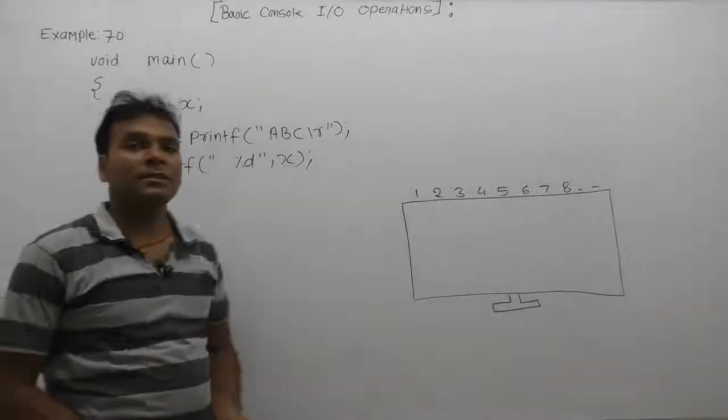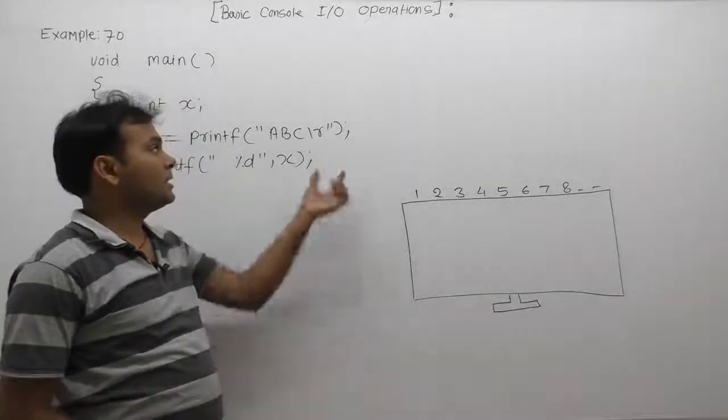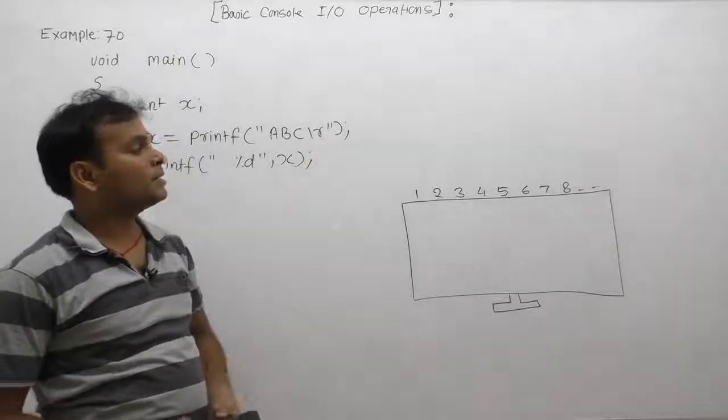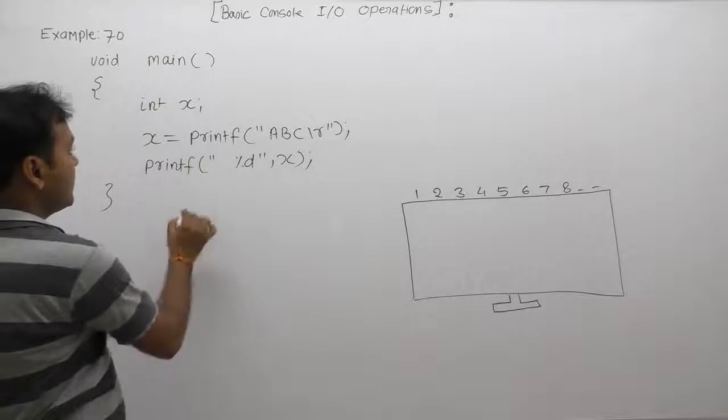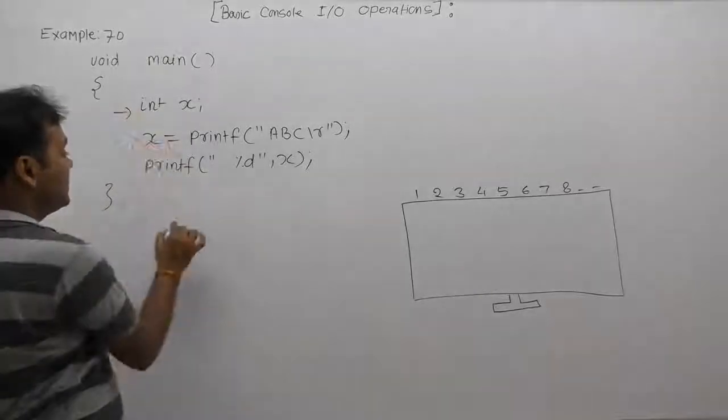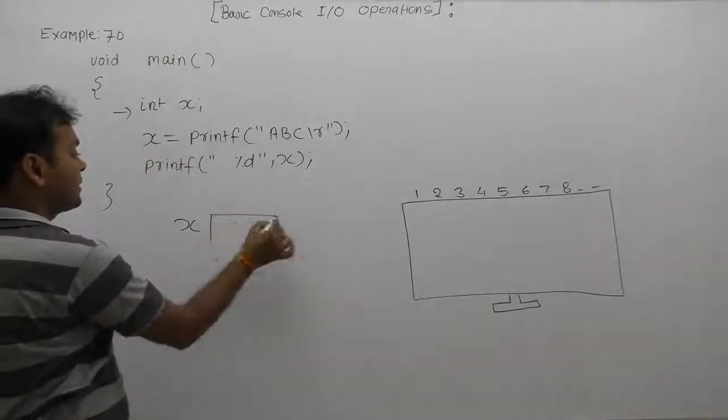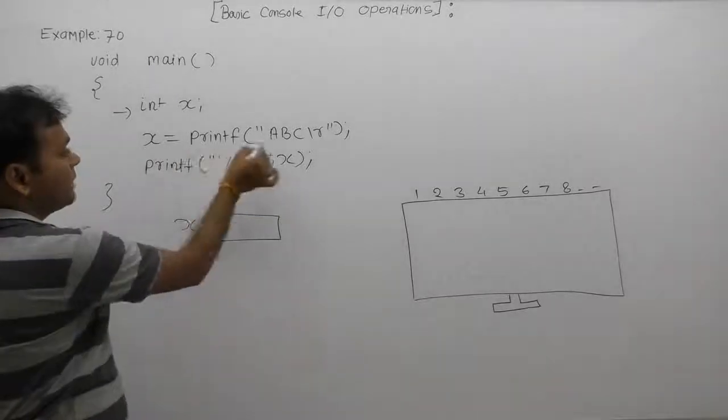Now, next example application. Here we are using escape sequence character slash r, means carriage return character. In that case, first of all we are creating some variable here x with the initial value as garbage.